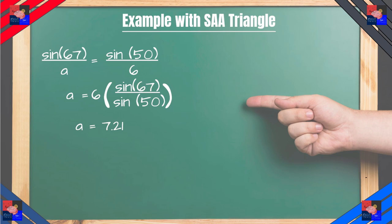We get 6 times sine of 67 degrees over sine of 50 degrees and we get right around 7.21 side length. As for C we use the same thing and we get right around 6.26 side length. So that was one example.